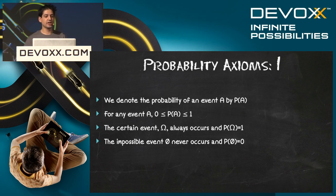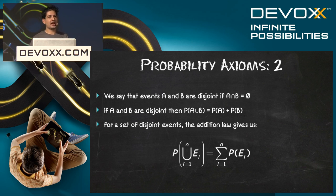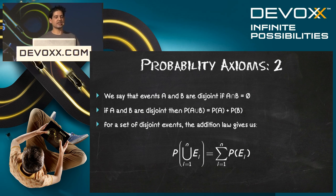Some axioms — axioms in mathematics are something we just state as true; we don't need to prove them. We're just saying we assume this statement is true, and on top of this we can build proofs, theories, lemmas, and all sorts of wonderful things. The probability of an event happening, P(A), is always between zero and one. One is a certain event that will always happen, and zero is the impossible event, meaning it will never happen.